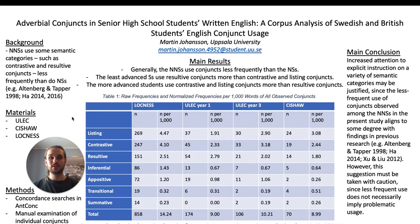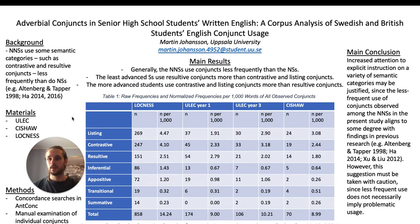Hi, my name is Martin Johansson and I am a former master's student at Uppsala University. In my master's thesis, I investigated adverbial conjuncts in senior high school students' written English. I used AND-CONC to investigate two learner corpora, ULIC and CHESHA, and I compared them with the native speaker control corpus, Loch Ness.